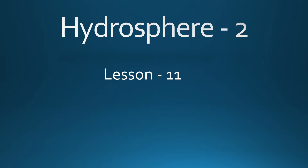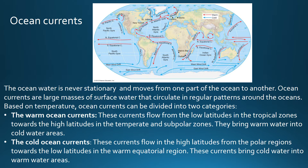Let us understand what is meant by ocean currents. The ocean water is never stationary and moves from one part of the ocean to another. Ocean currents are large masses of surface water that circulate in regular patterns around the oceans. Here you have a map showing the important ocean currents, and as you can see, all ocean currents flow in regular patterns.